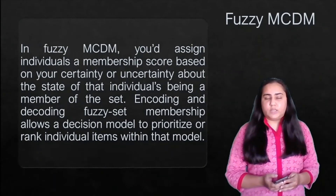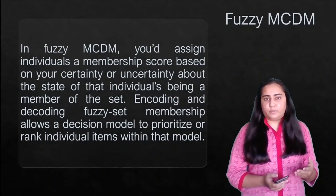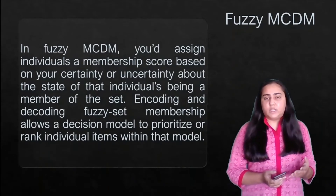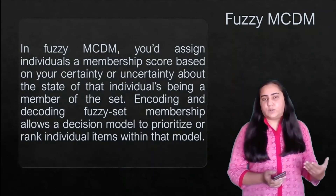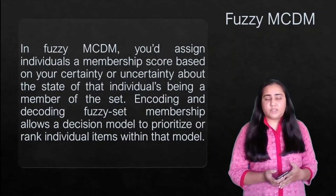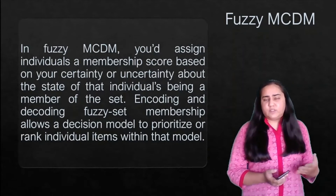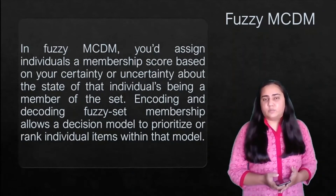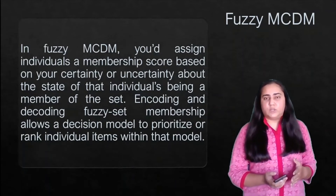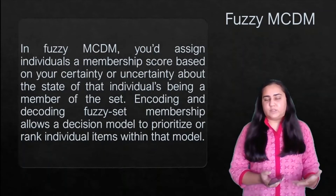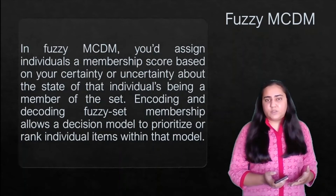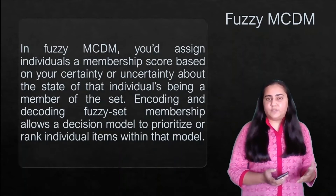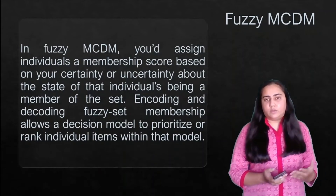In fuzzy MCDM, you assign individuals a membership score based on your certainty or uncertainty about that individual being a member of the set. Sometimes it's not easy to say for sure if something is certain or uncertain, so a score of zero or one doesn't make sense — you consider how certain or uncertain it is and assign a score accordingly. Encoding and decoding fuzzy set membership allows a decision model to prioritize or rank individual items, letting you prioritize criteria based on the score given.